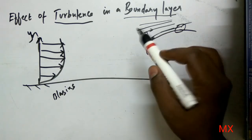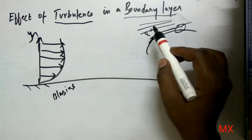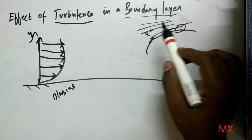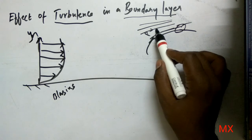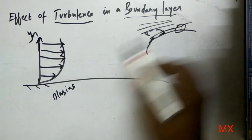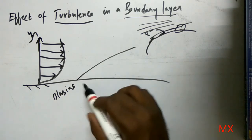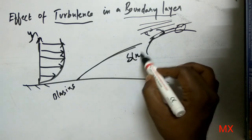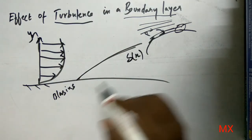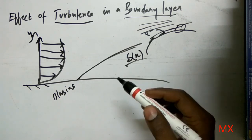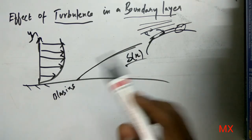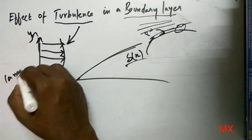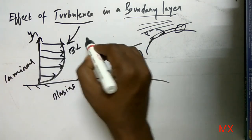The free stream loses momentum quickly. When the momentum transfer increases, the momentum is lost quickly, and the boundary layer automatically grows larger. The boundary layer thickness, here defined as delta, grows larger because the turbulent effect on this laminar surface causes the boundary layer to grow. This is the main consequence of turbulence on the laminar boundary layer.